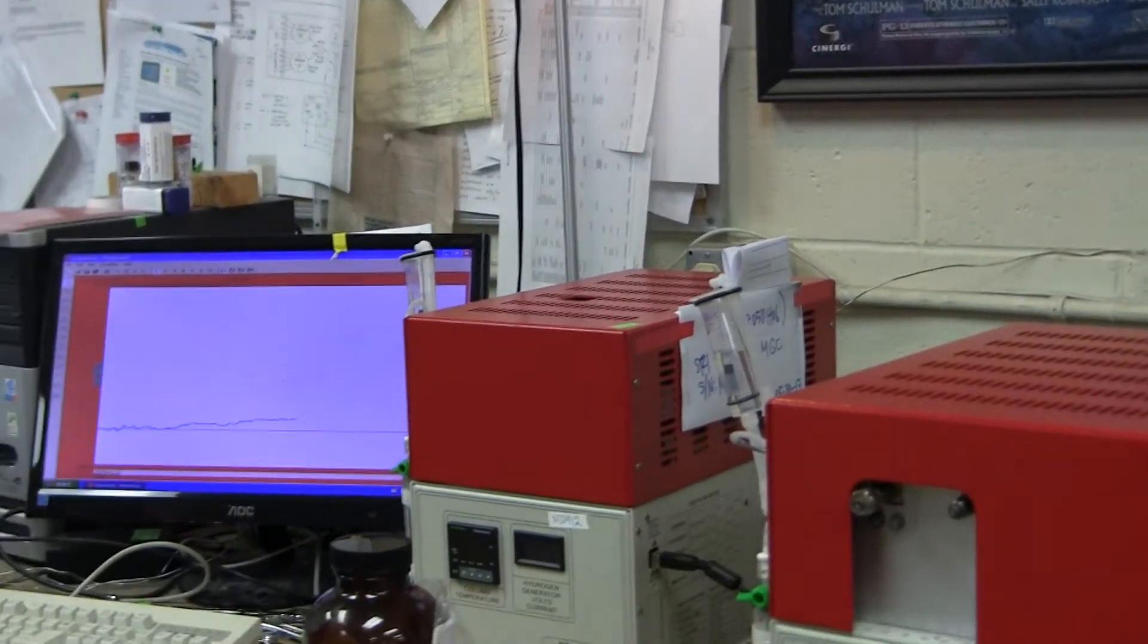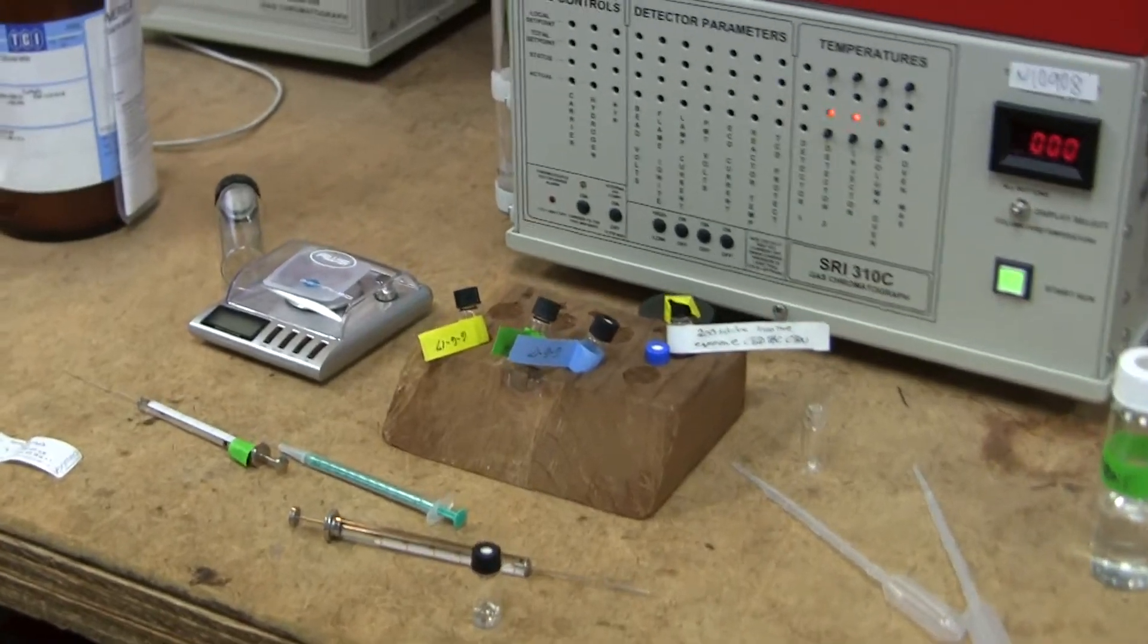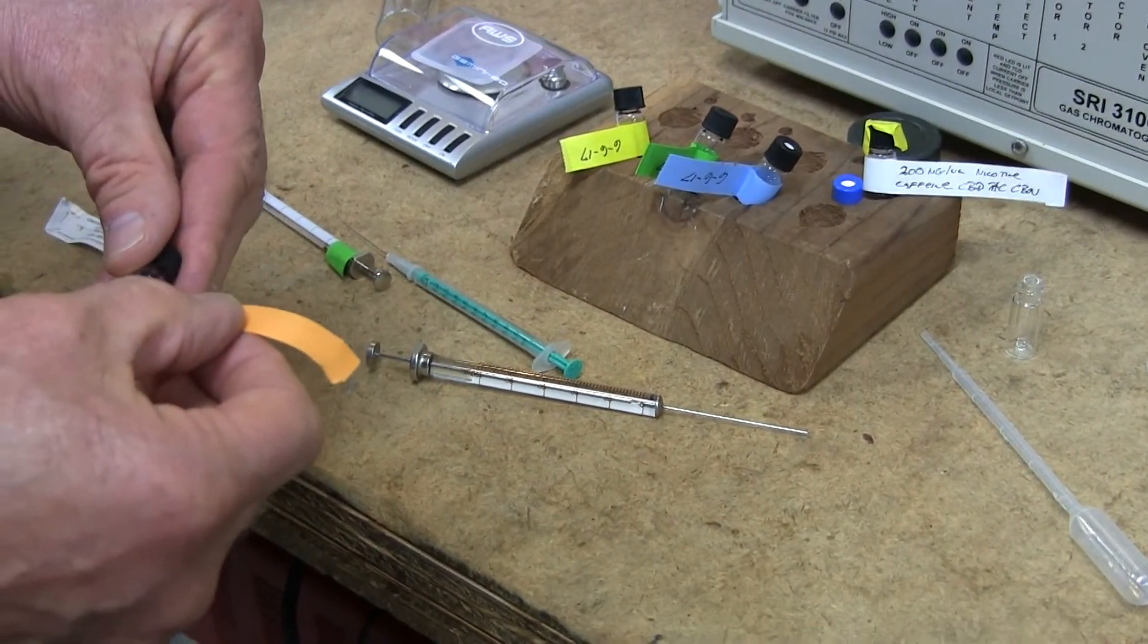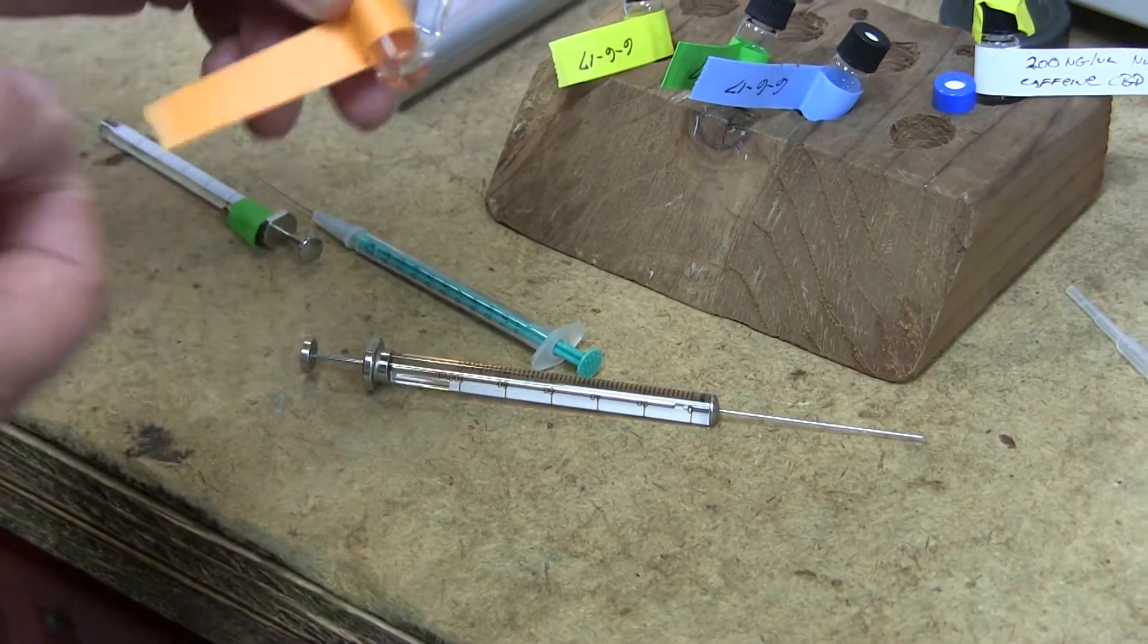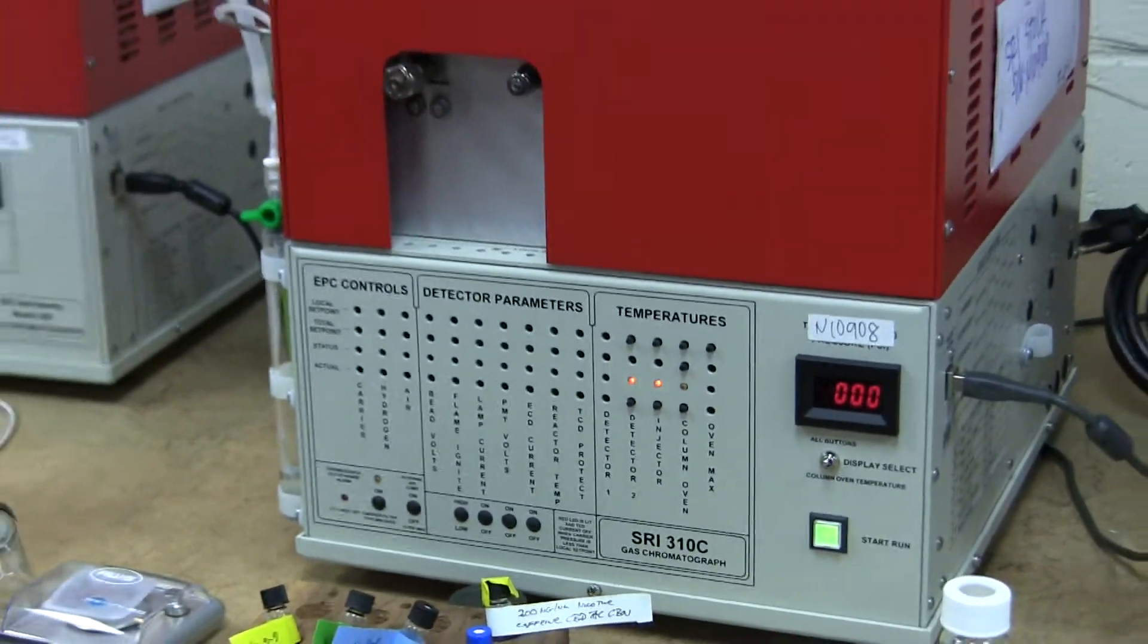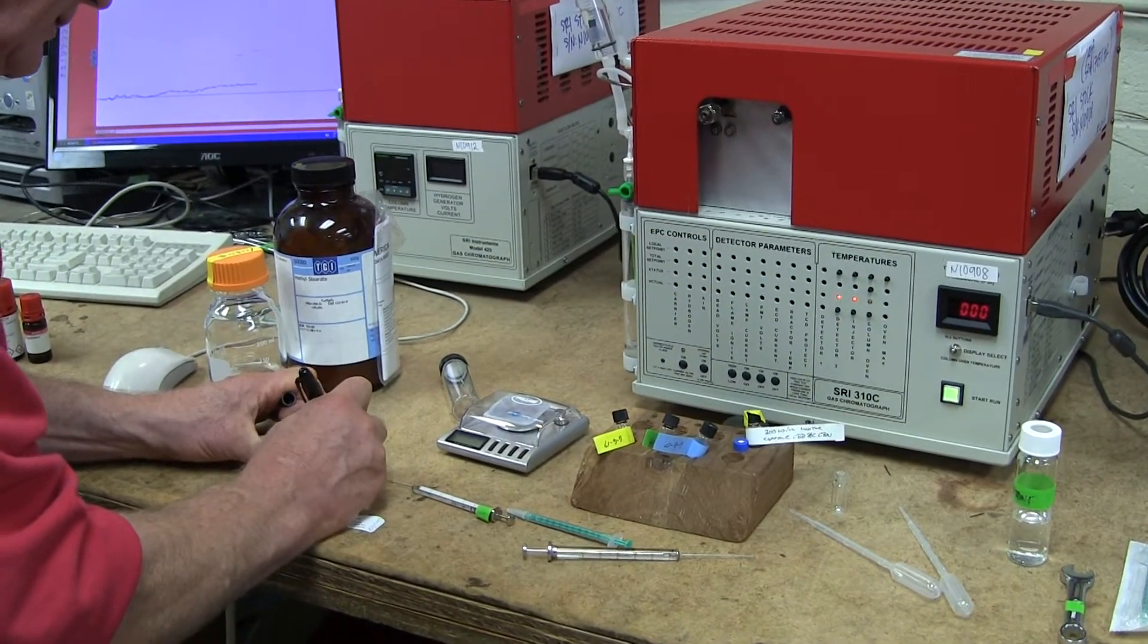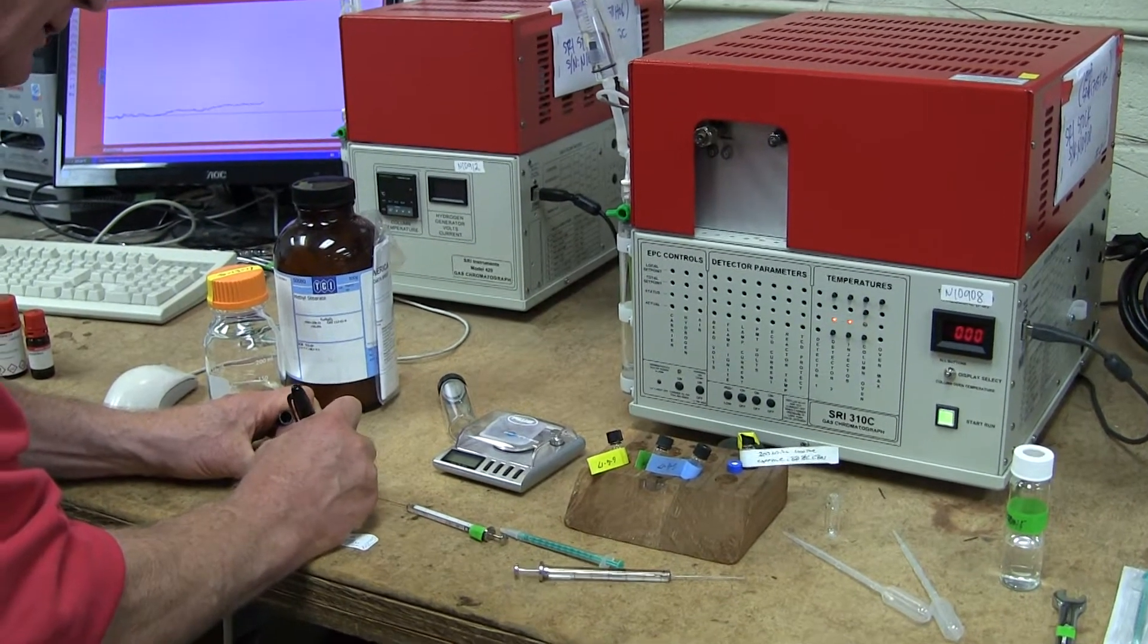So in the bottle, there should be a total of 300 microliters of liquid. So I'm going to label that up. And we are going to label this and call it CBD, THC, CBN, 333 nanograms per microliter, okay?